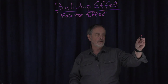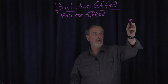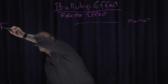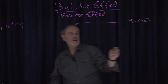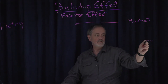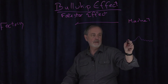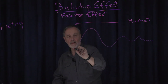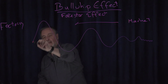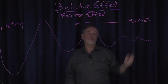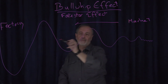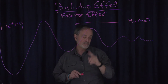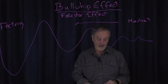So what we see across the whole supply chain, starting with the market, is demand that starts relatively flat, sees a little bit of a peak — just a few percent — goes through to the retailer, they see an increase; goes through to a distributor, they see an increase; and at the factory it goes crazy. That's the bullwhip effect along this line — that's why it's called the bullwhip effect. So amplification and lead time offset are the two characteristics of the bullwhip effect.